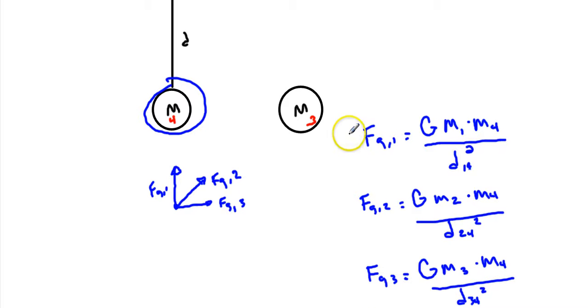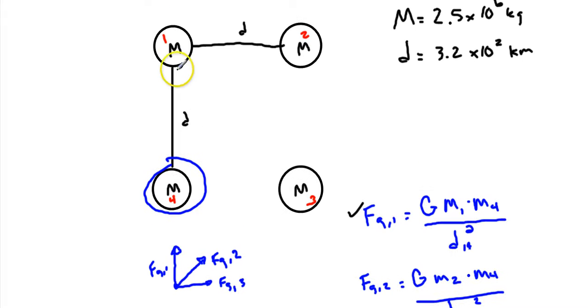Now two of them, this one and this one, we already know everything in there. We know m1, we know m4, we know d14, because d14 is this distance here, d34 is this distance here, but d24, that's this distance here. And you can figure it out doing some trig, or you can remember that this side, if this is d and this is d, this forms a 45-45-90 triangle. So this side right here ends up being root 2 times d.